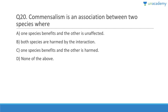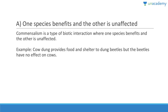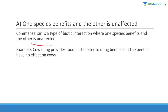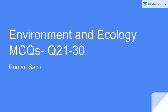Question 20: Commensalism is an association between two species where one species is unaffected but the other benefits. Answer is A. It is exactly the opposite of amensalism. Commensalism is a type of biotic interaction where one species benefits and the other is unaffected. For example, cow dung provides food and shelter to dung beetles, but the beetles have no effect on cows whatsoever.